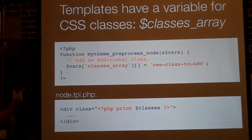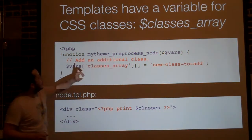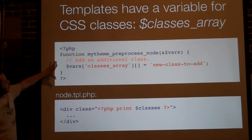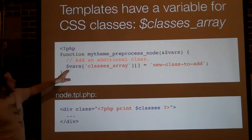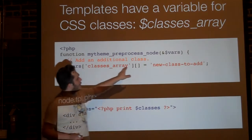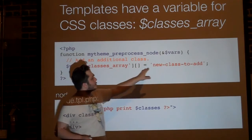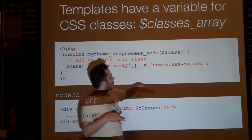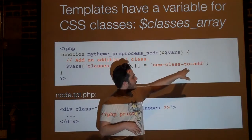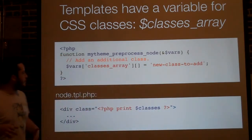Templates now have a variable for CSS classes called classes_array. To show that off, here's a little snippet from Drupal.org. Basically, we see this variable — vars classes_array — and since it's an array, I can add to it. So I'm adding a new class to this template called new-class-to-add.